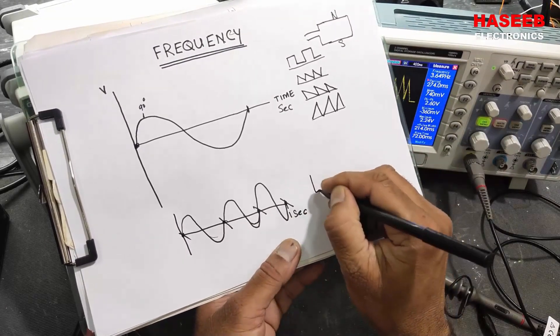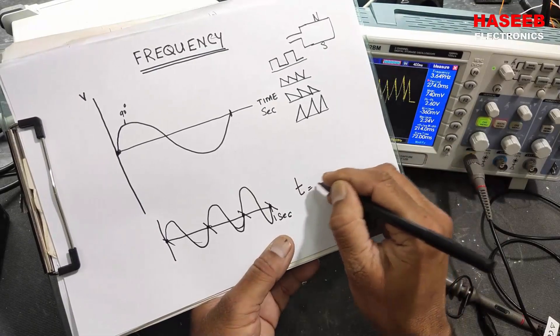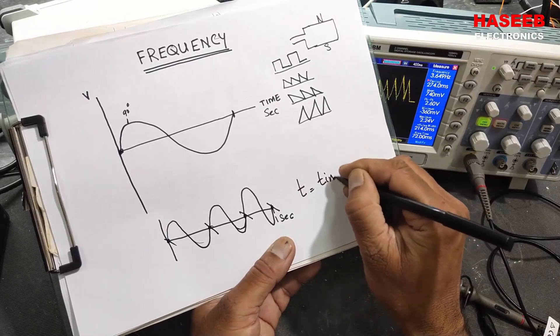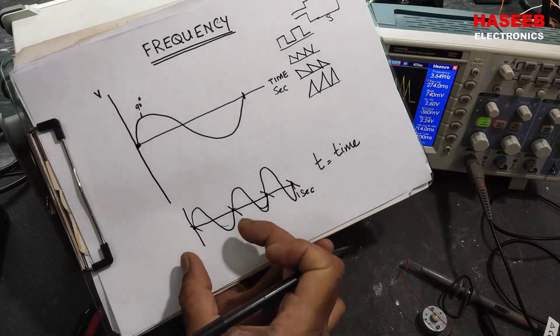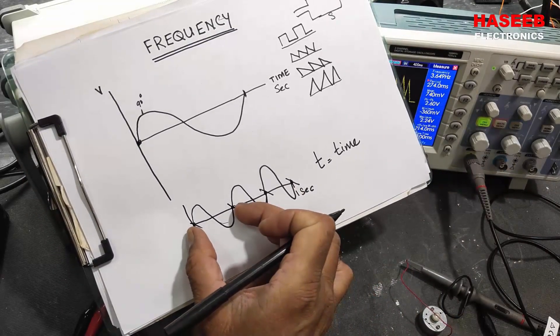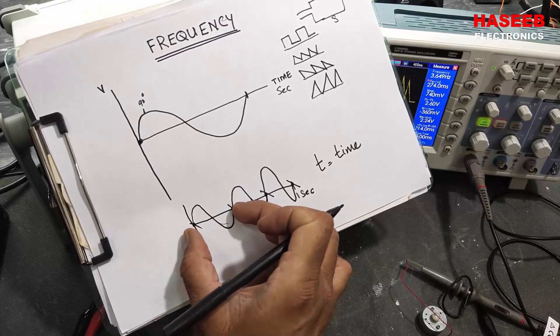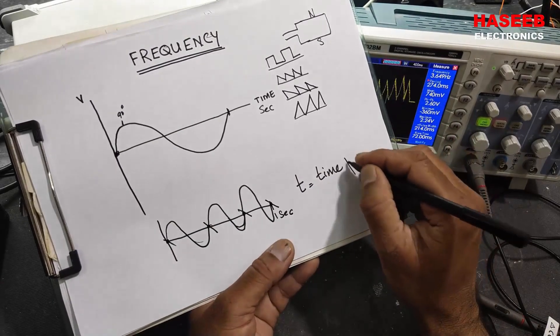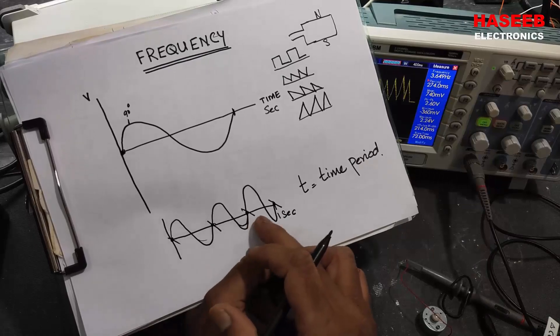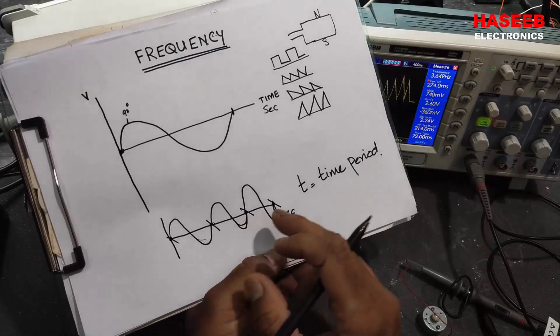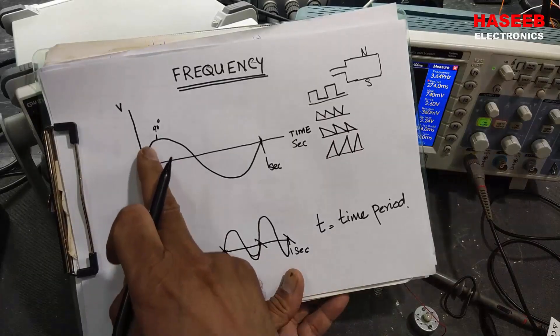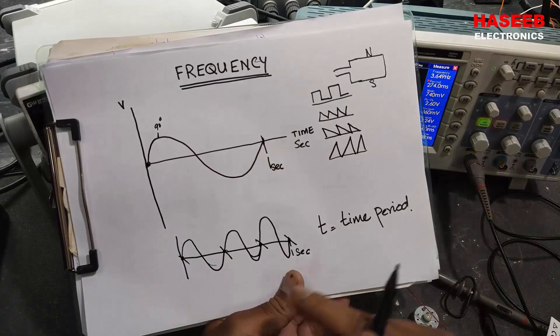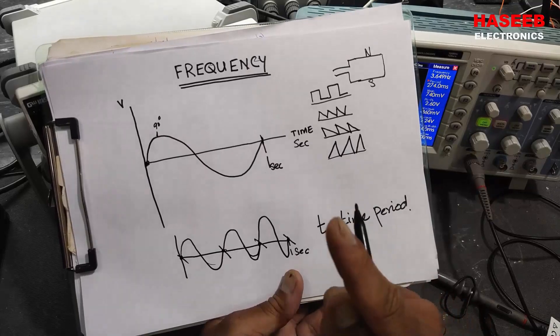It is called time - one second. And how much time it will take to complete one cycle is called time period. So we have three cycles in one second. If our wave shape is completing one cycle in one second, so its time period will be one second.